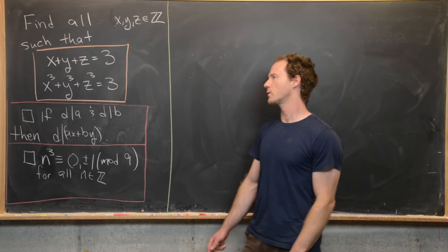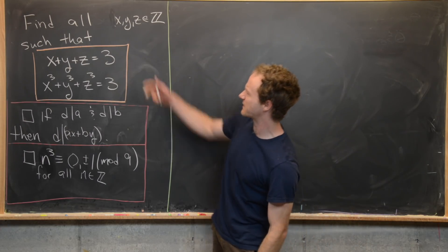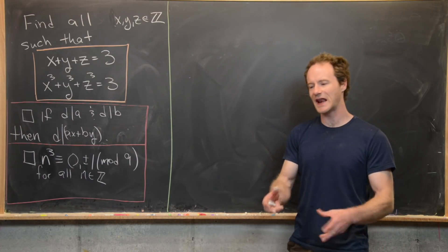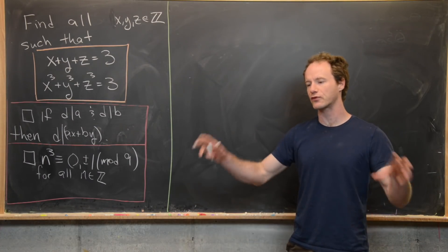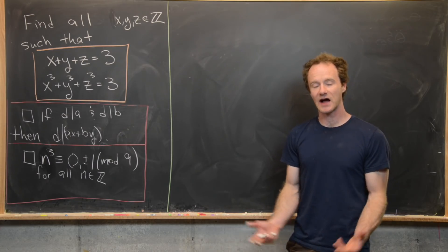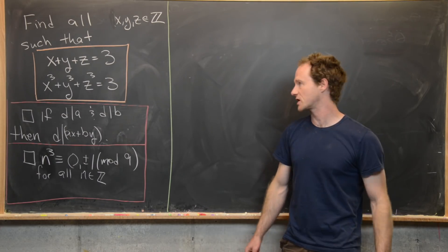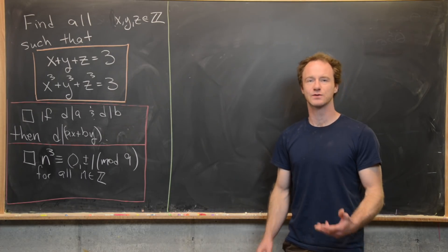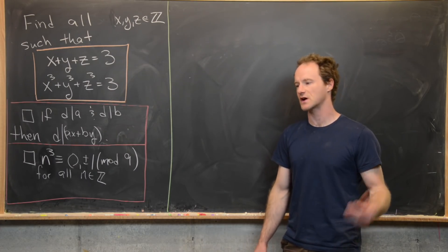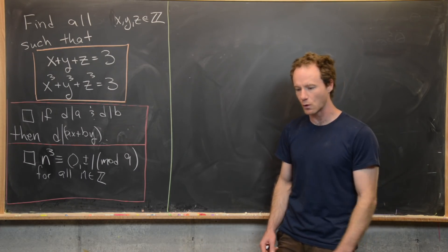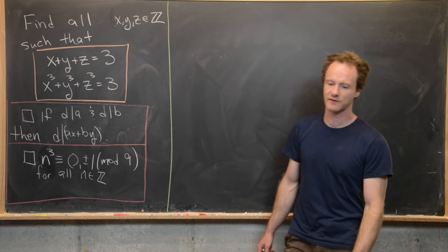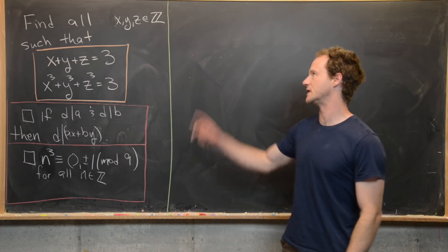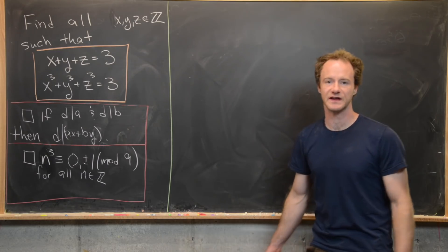Before we get started, I want to notice that we've got a system of two equations and three unknowns, which would be a pretty interesting algebra-geometric question if we were taking x, y, and z in the real numbers, the complex numbers, or in complex projective space. But that's not what we're doing here — we're looking over the integers.